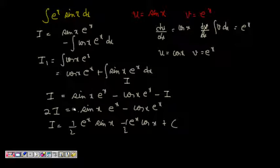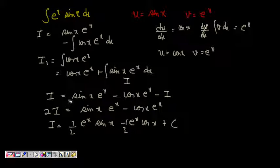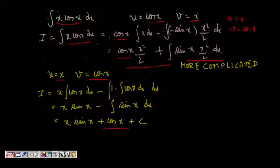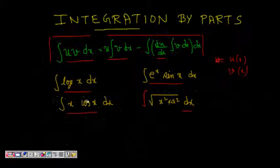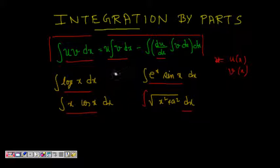We see how beautifully I appeared in terms of itself again, and we could write the equation 2I = e^x(sin x − cos x) and solve it. We now understand what integration by parts is. Just use this formula wherever you see that the integrand is a product of two functions. Thanks a lot.